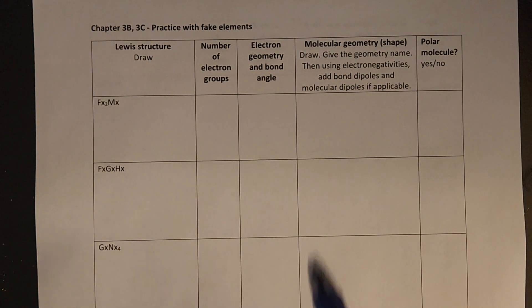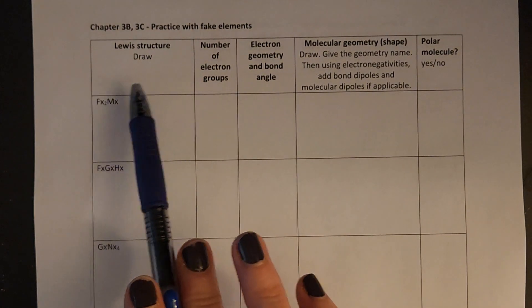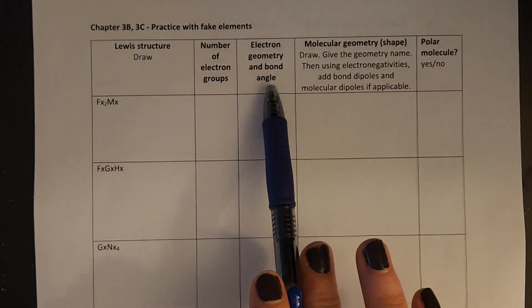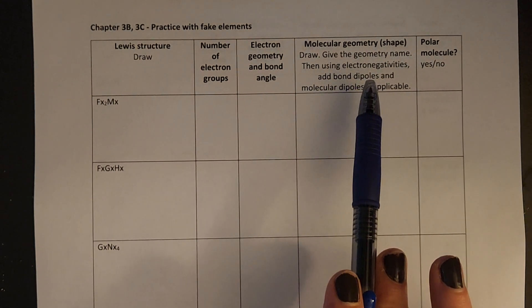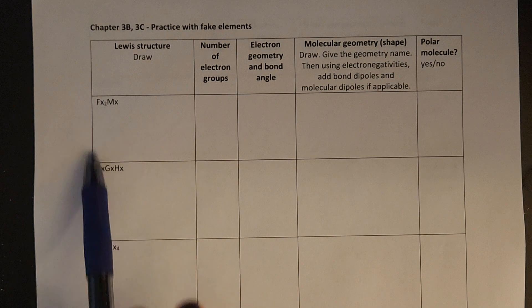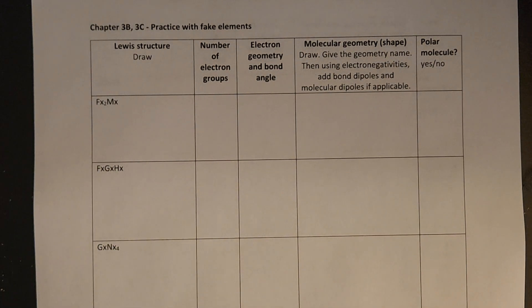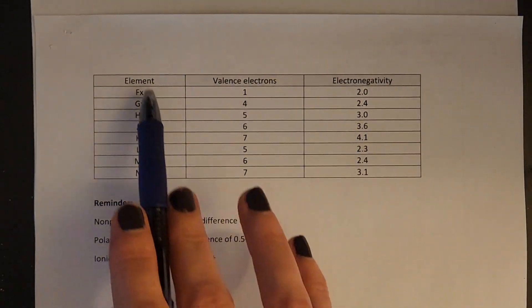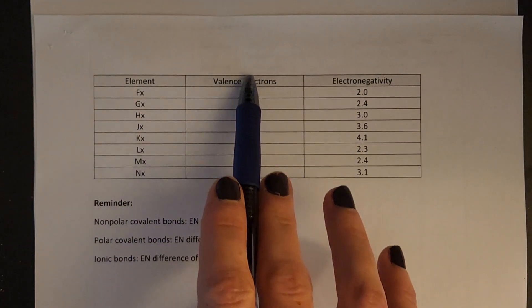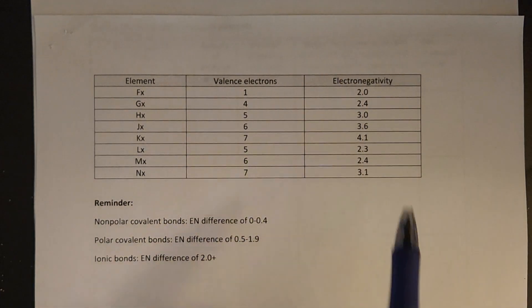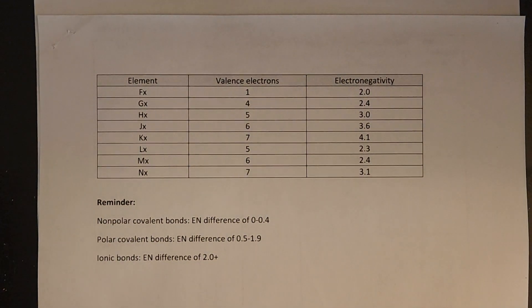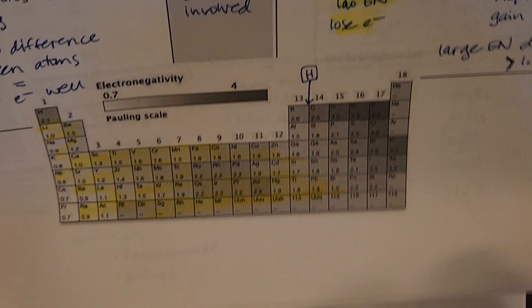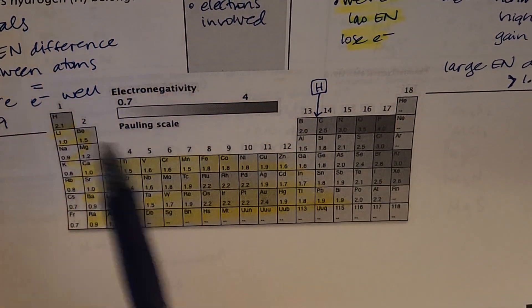Hi everyone! We're going to work some practice problems with Lewis structures, electron geometries, and molecular geometries, but we're going to work them with some fake elements like you might see on your quizzes coming up. You will always be given some kind of table with elements, their valence electrons, and electronegativities.